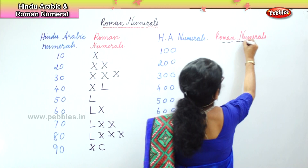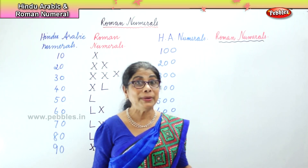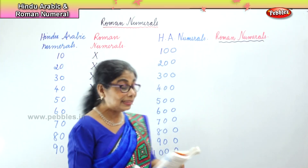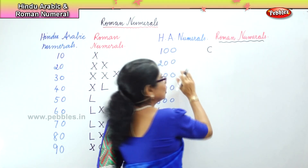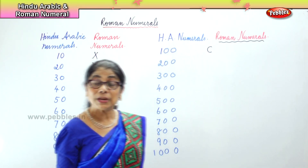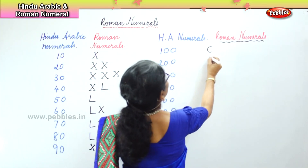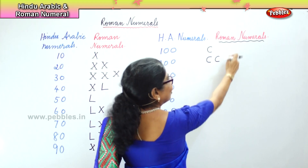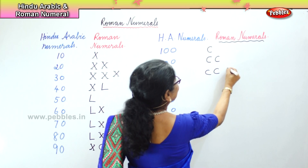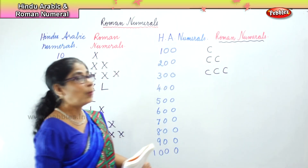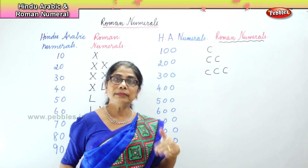Now let's work on the Roman numerals together. 100 — what is the Roman number symbol for 100? 100 is C. So 200 and 300 are the same repetition. How many times can you repeat according to the rule? Three times. So you have 100, then 200, then 300. When it comes to 400, there is a change.